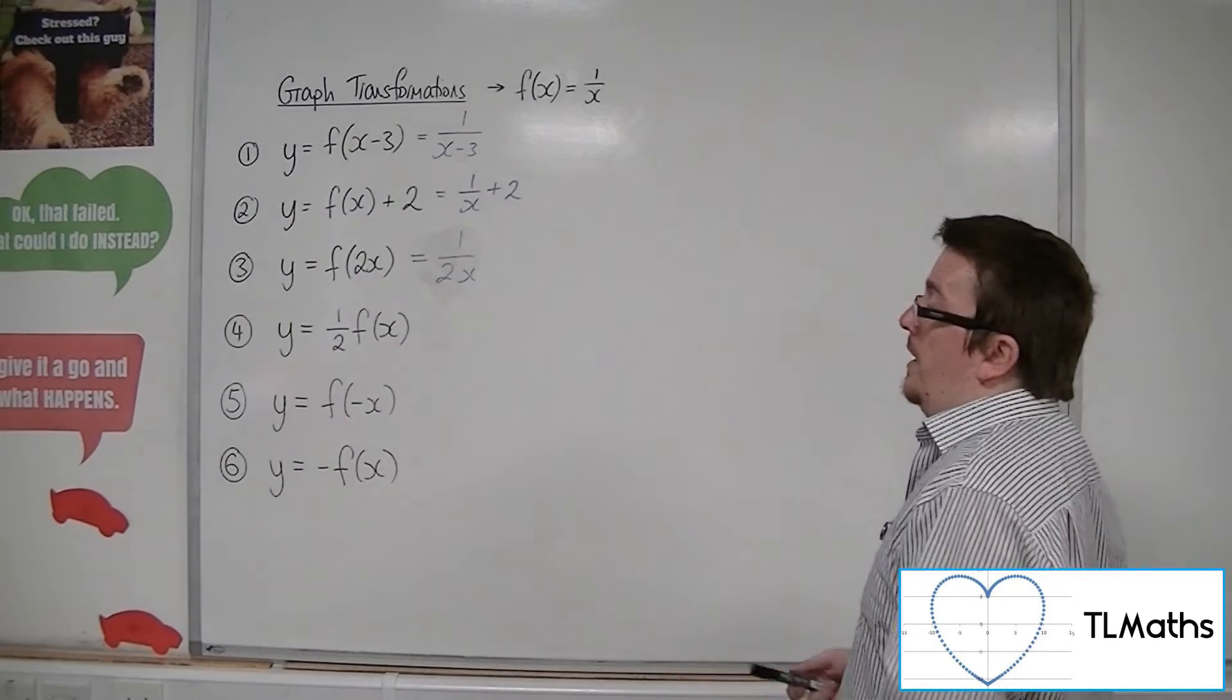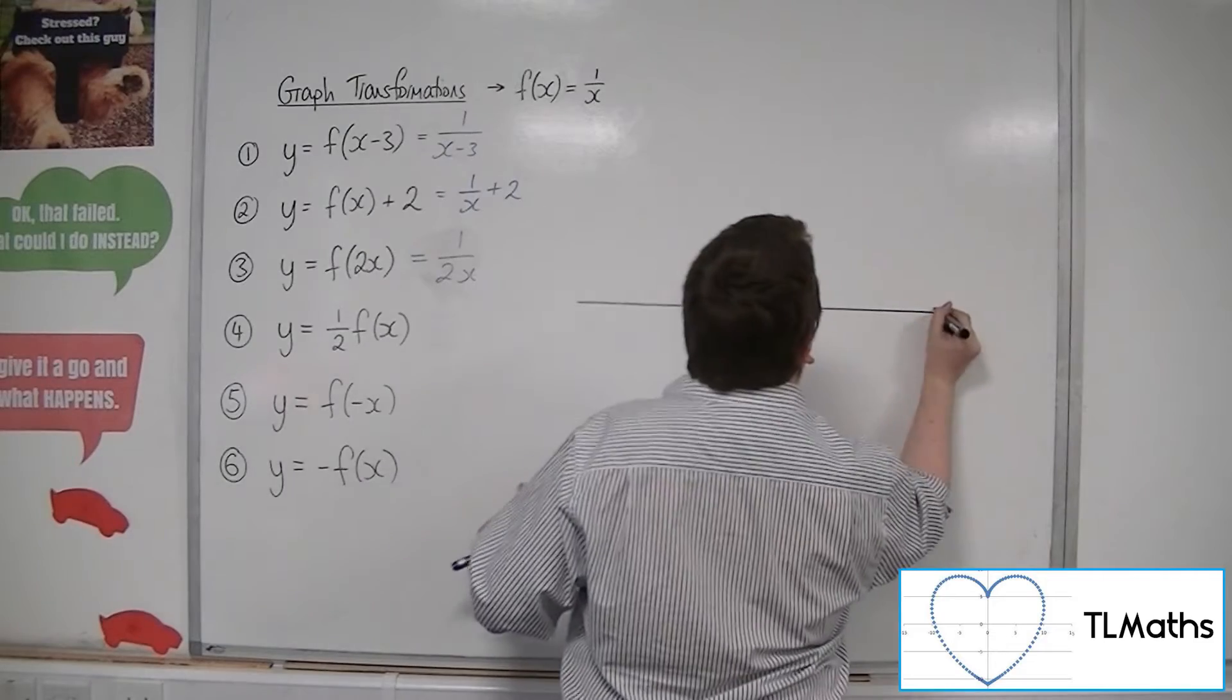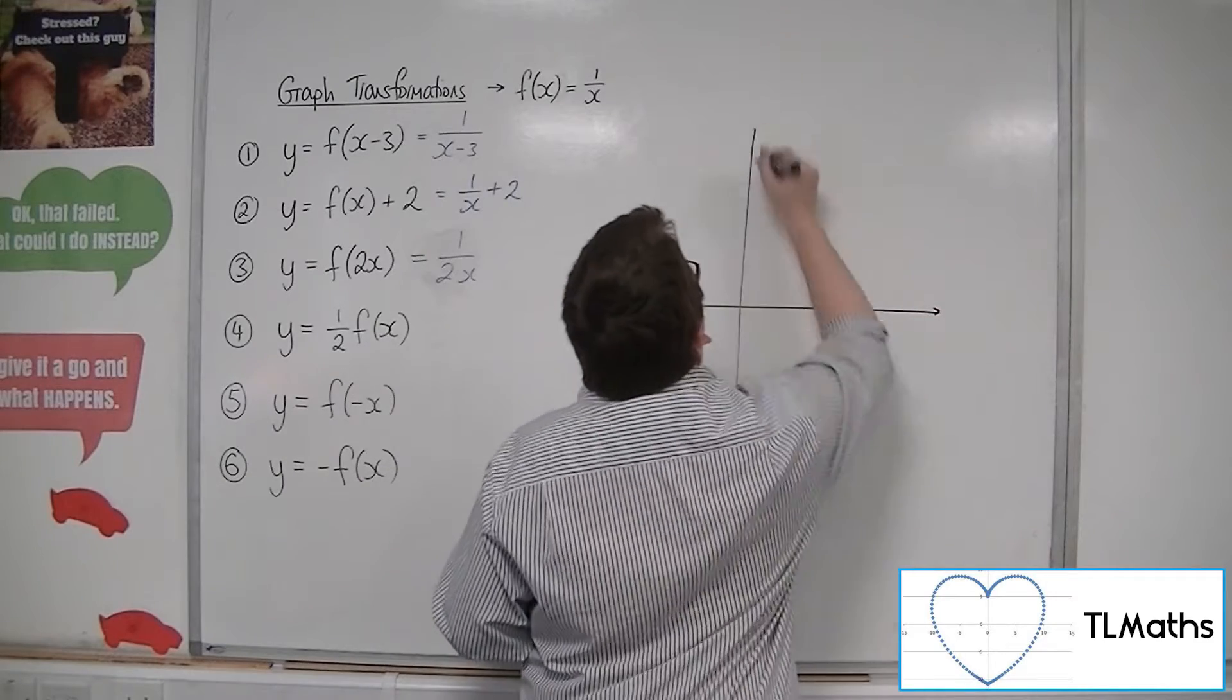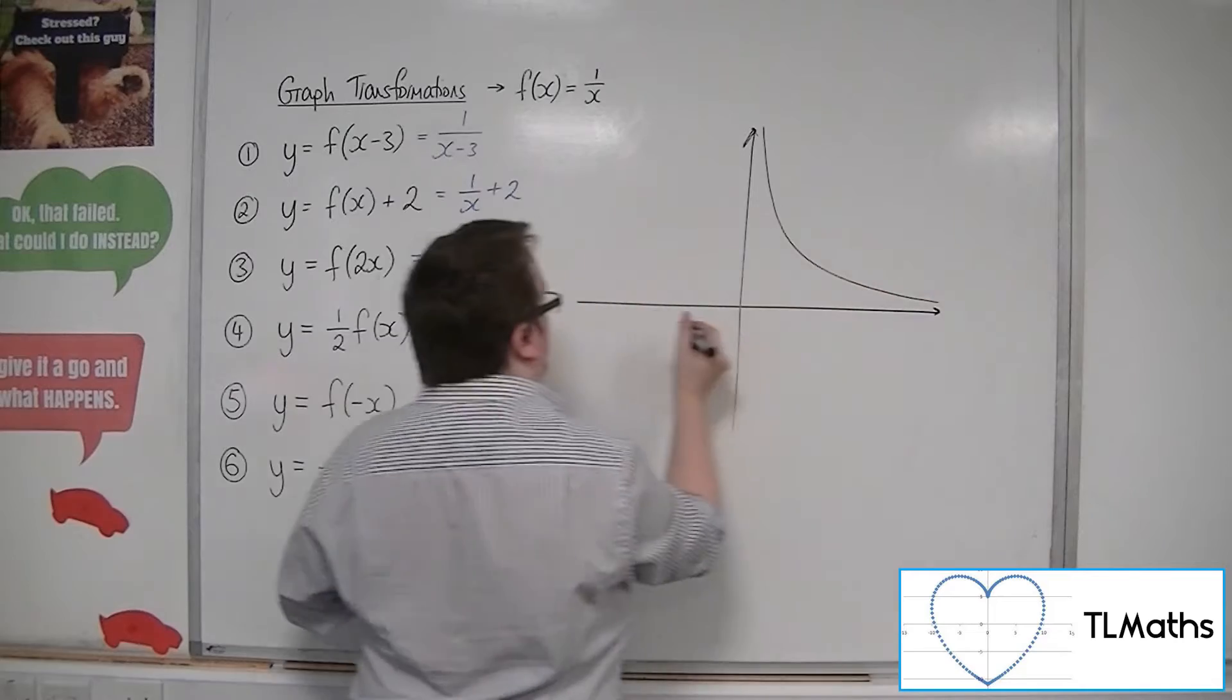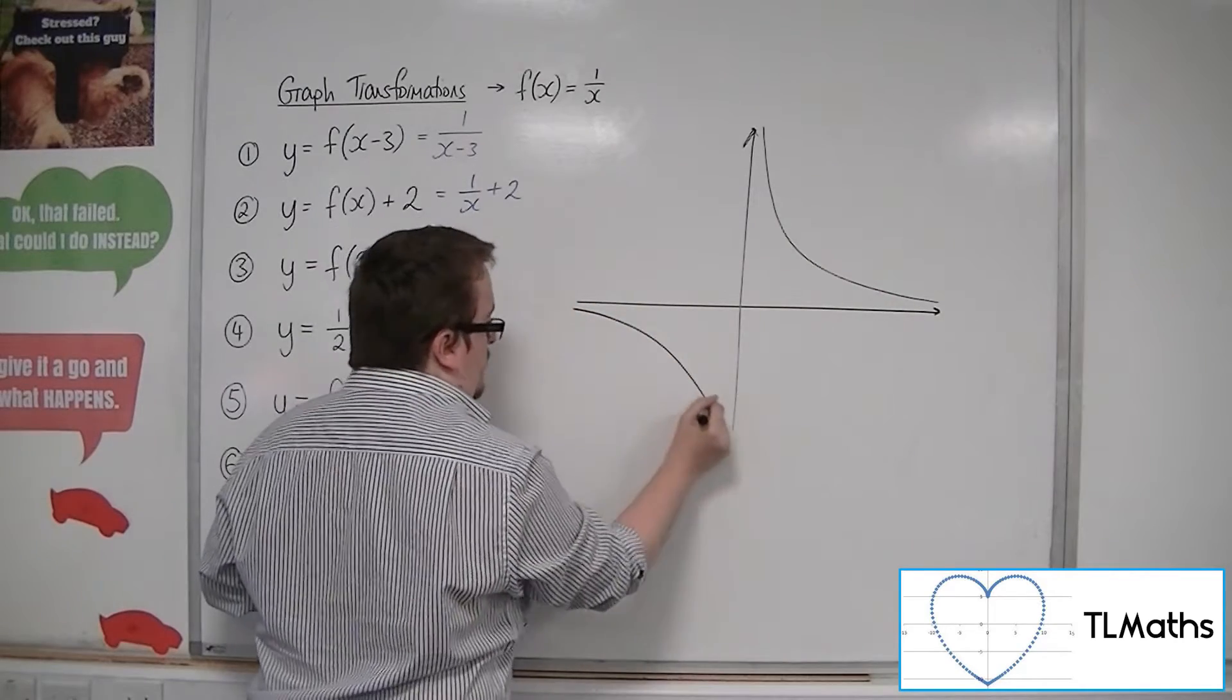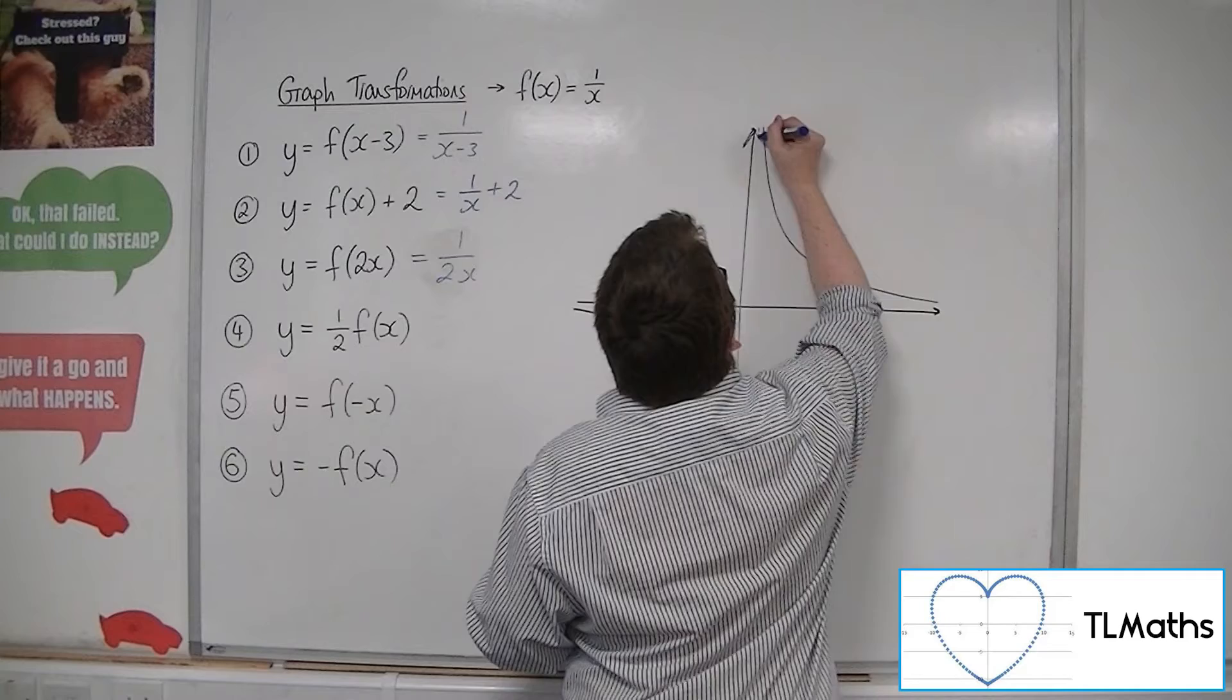Now, as for y equals 1 half f of x, what you'd actually find is that I should be drawing precisely the same curve as I just drew. I should have really left it up there. Now, why is that the case?